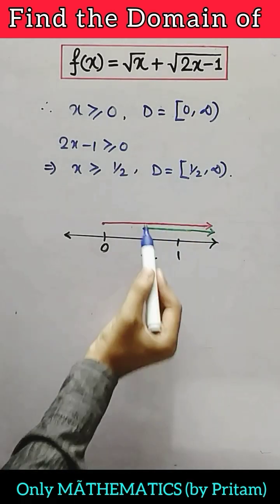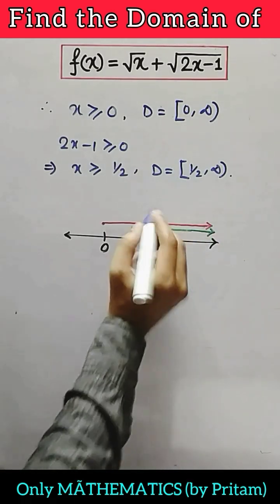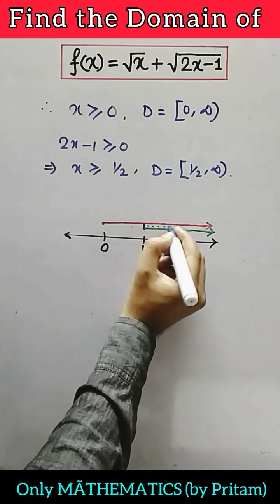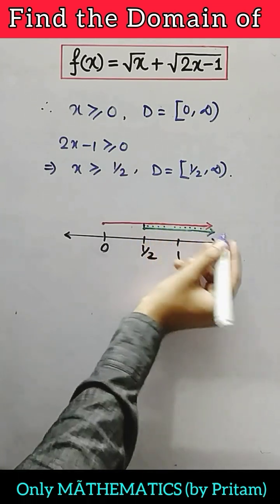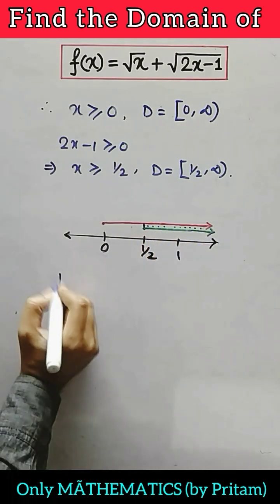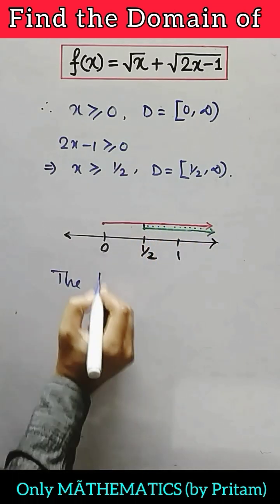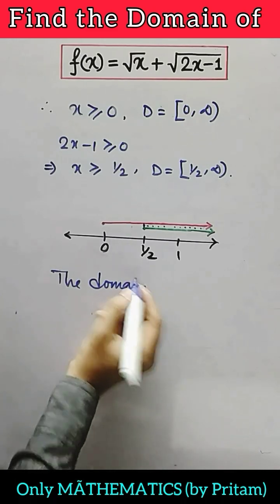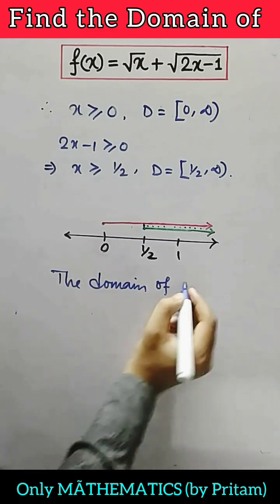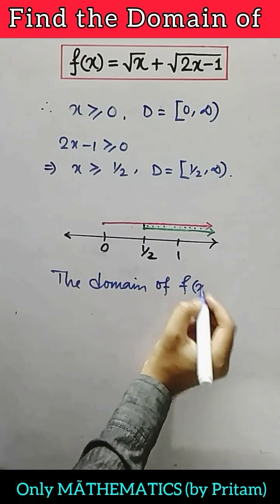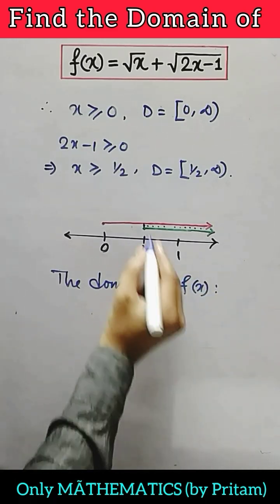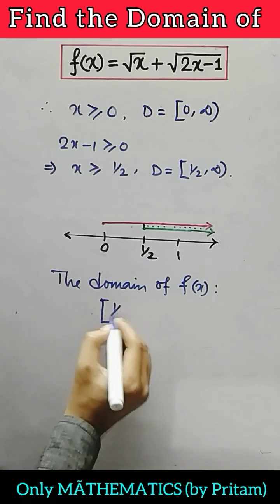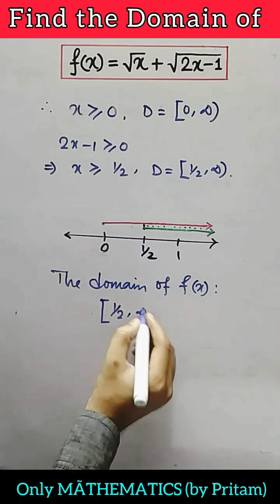We will find the common part of these two given lines. This portion is the common part. The domain will be the common interval of these two given functions. Therefore, this common part — that is half to infinity — is the domain.